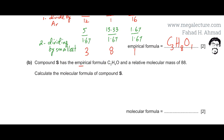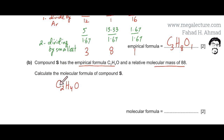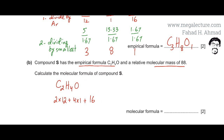Remember, the empirical formula is the simplest ratio of all the elements. The molecular mass is 88. The first thing I am going to do is figure out the mass of the empirical formula C2H4O: 2 carbons is 2 × 12, 4 hydrogens is 4 × 1, and 1 oxygen is 16. The total mass of the empirical formula is 24 + 4 + 16, which equals 44.